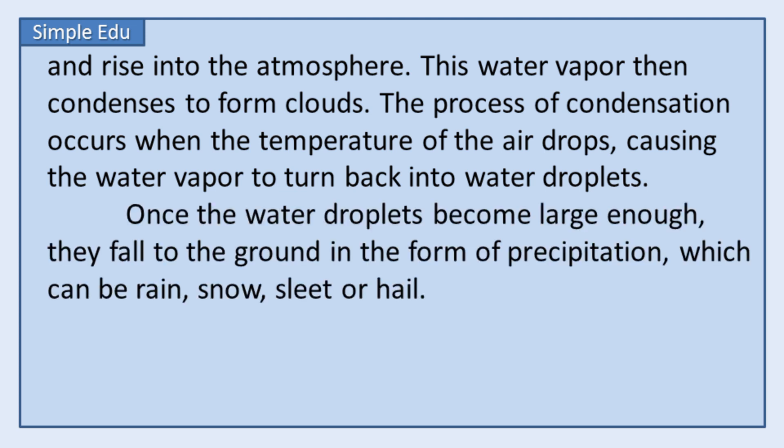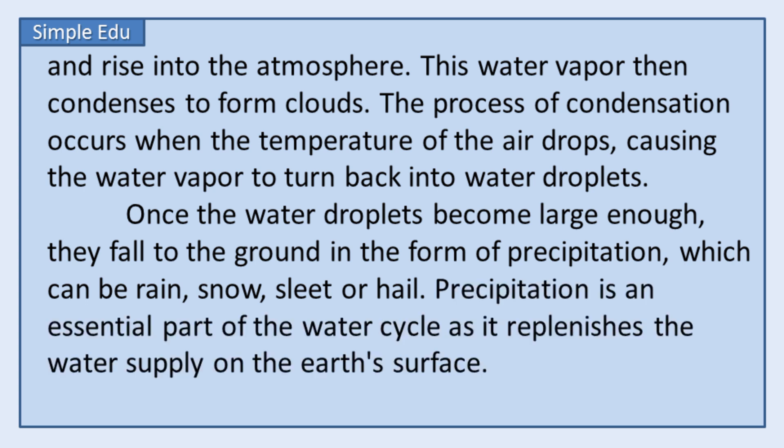Once the water droplets become large enough, they fall to the ground in the form of precipitation, which can be rain, snow, sleet, or hail. Precipitation is an essential part of the water cycle as it replenishes the water supply on the Earth's surface.